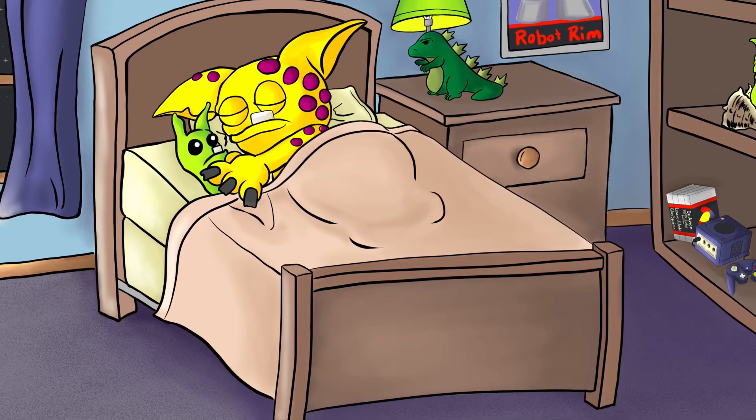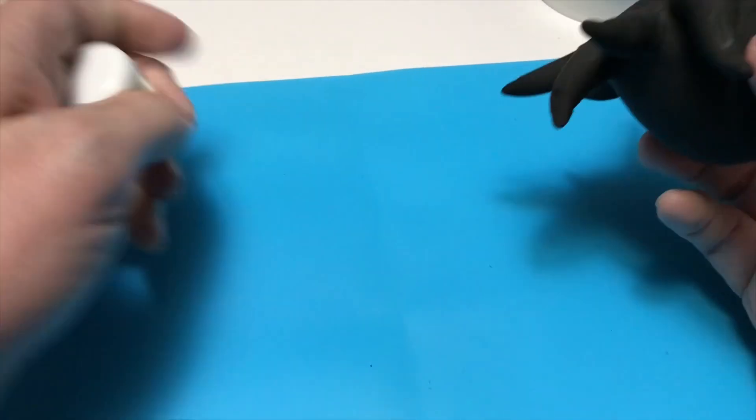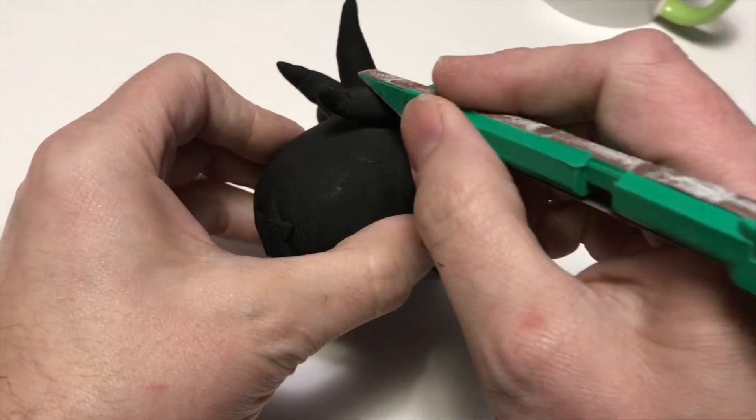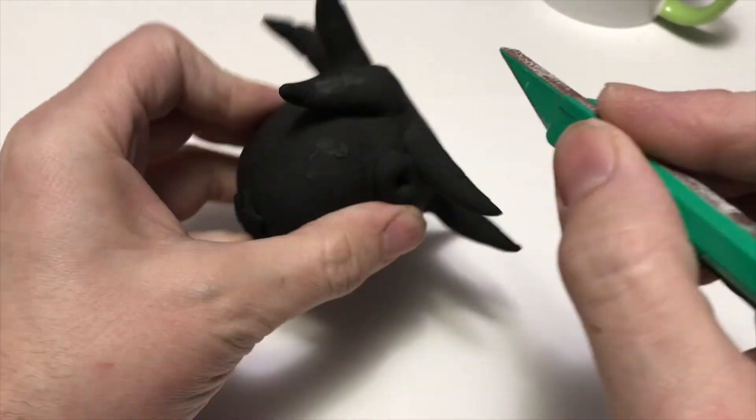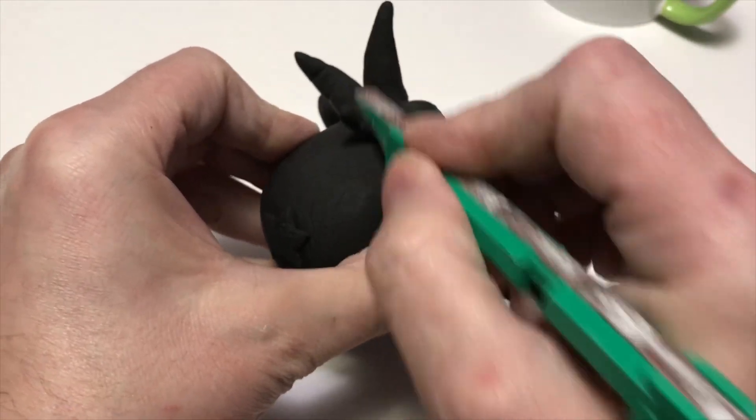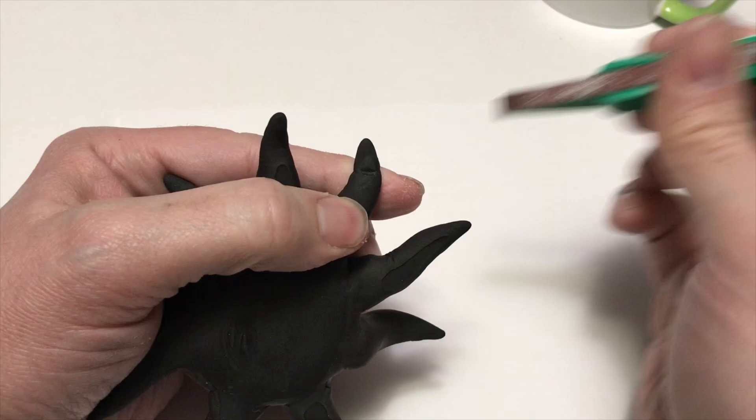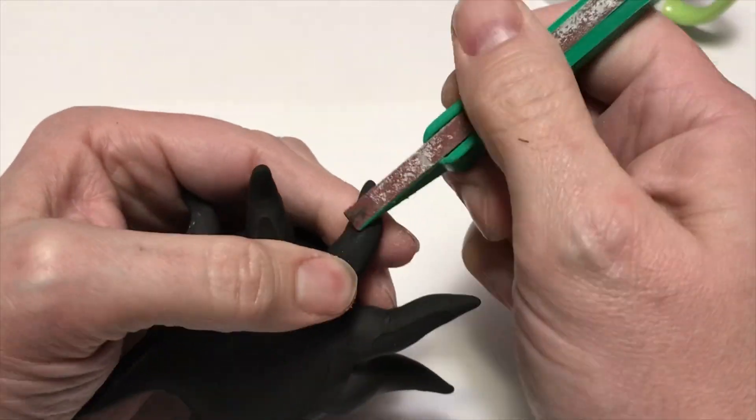So I went ahead and let this dry overnight, flipped it over so the bottom could dry and let it dry for another day. Here is the finished sculpt. It does have some rough spots and this stuff does say it's sandable, so I decided to sand it. Just using this little sanding tool I got from Nerdy Crafters Not Another Crap Kit. And it worked really well to just smooth it out a little bit.